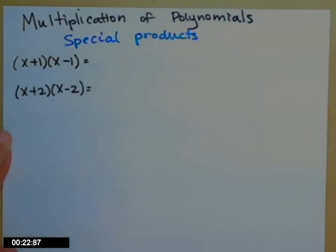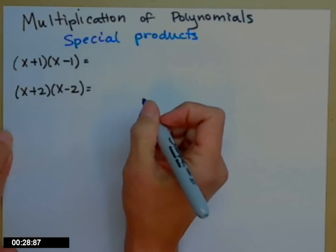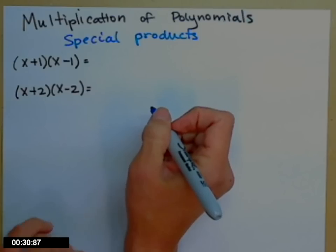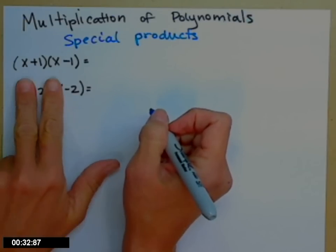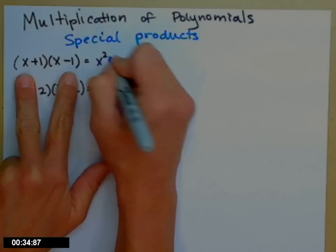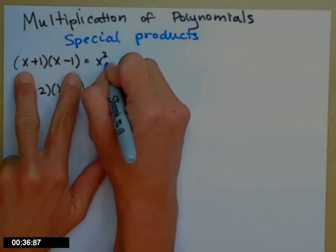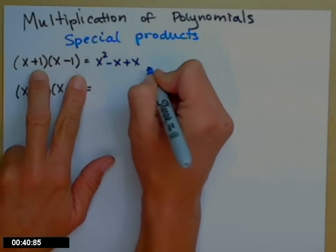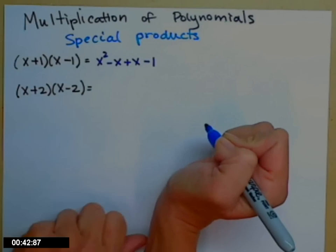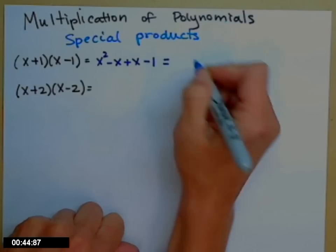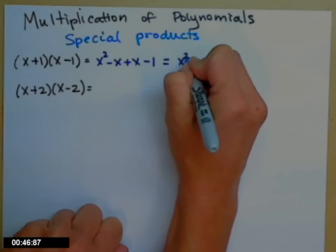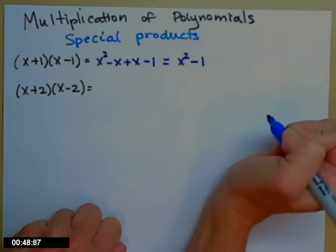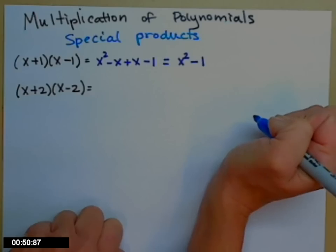So x plus 1 times x minus 1. Let's go ahead and use our FOIL technique to multiply those out. First x times x, outer x times negative 1, inner 1 times x, last 1 times negative 1. What happens to those middle two x's? One's positive, one's negative, and they add out, and all I'm left with is x squared minus 1.